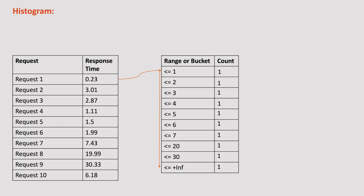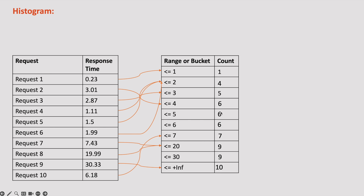Request 2 took 3.01 seconds, which fits in the bucket less than or equal to 4 and further. So now the count of the buckets from less than or equal to 4 increases. If we fit all these requests in these buckets, the count looks something like this — 6 requests took less than or equal to 5 seconds and 9 requests took less than or equal to 20 seconds. So whenever we need a metric recorded in buckets, we should use histogram.